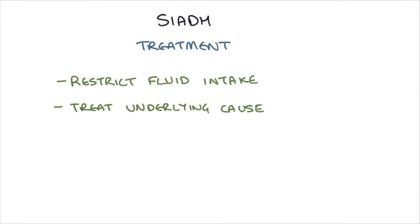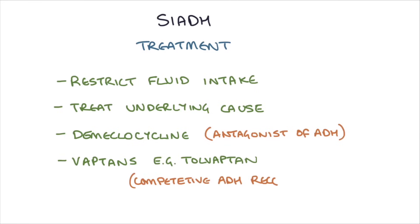What they used to use is an antibiotic called demeclocycline, which happens to be an antagonist of ADH, but now that's been replaced by something called vaptans, for example, tolvaptan. What these do is they're competitive ADH receptor antagonists. They bind to the ADH receptor and prevent the antidiuretic hormone from attaching to that receptor and activating it. So they basically block the action of ADH. These medications are very powerful, so it's important to use them very carefully because they can cause a very quick rise in the serum sodium, which can be dangerous.